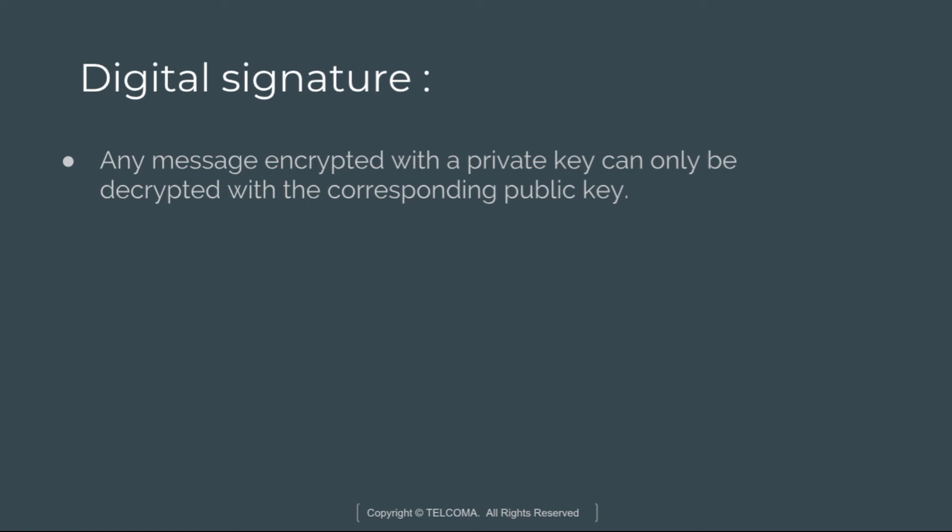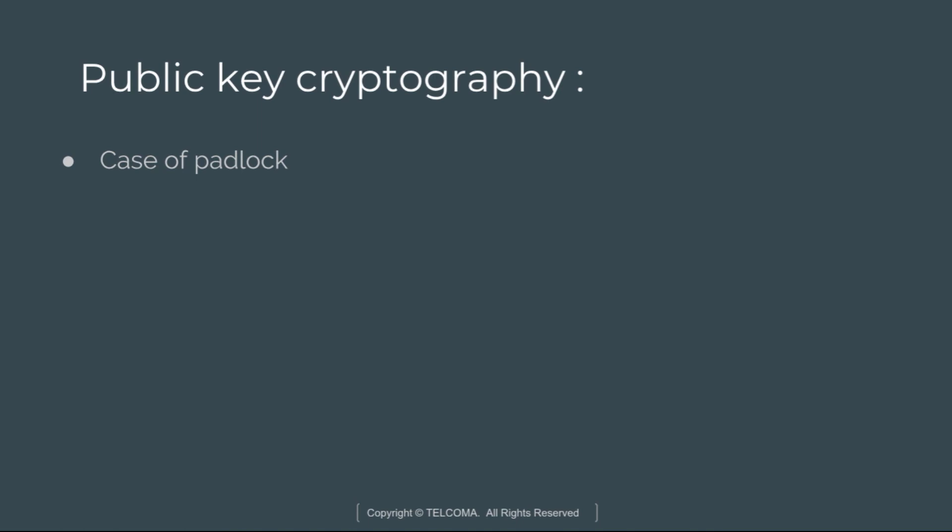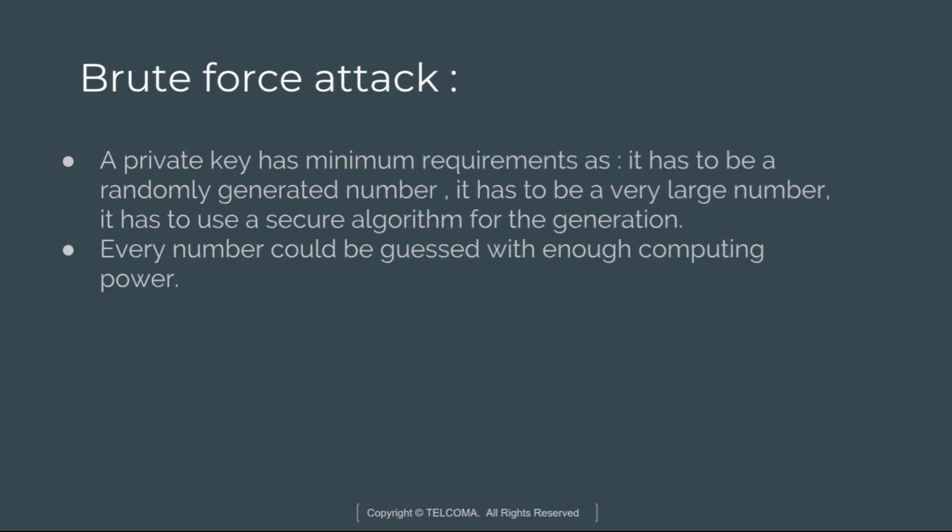In digital signatures, any message encrypted with the private key is decrypted with the corresponding public key. In public-key cryptography, we use the padlock case as an example. Suppose A and B are two persons who want to communicate privately. They both need padlocks. If B sends a message to A but is worried someone might intercept it, B asks A to send a padlock over. A keeps her key, B puts the letter in a small box, locks it with the padlock, and sends it. This letter can travel around the world without being intercepted by any unauthorized person — it can only be decrypted by A.